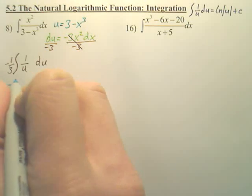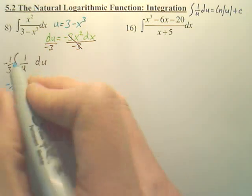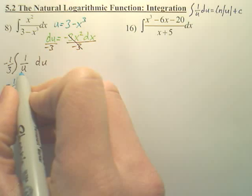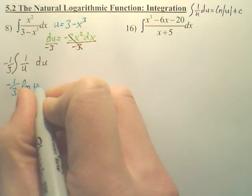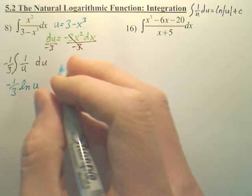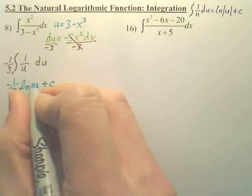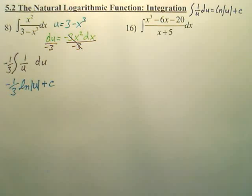We simply have negative 1/3, the integral of 1 over u is simply going to be ln of absolute value u plus c.